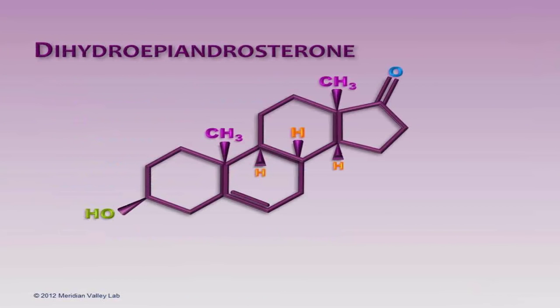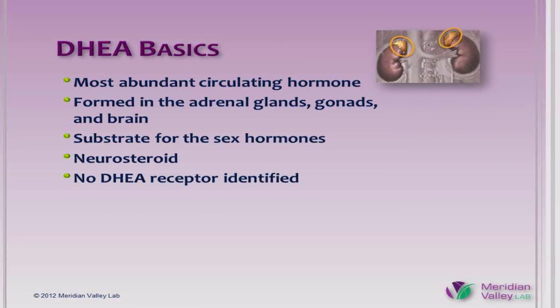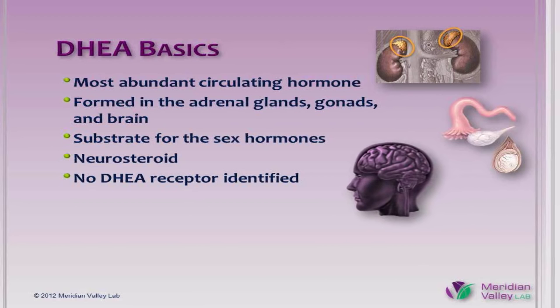DHEA is a 19-carbon endogenous steroid. It's the most abundant circulating hormone in the human body, and not only in humans, but in other mammals as well. It's formed primarily in the adrenal cortex and also formed in the ovaries, testes, and in the brain. It serves as a substrate for the sex hormones — testosterone, estrogen, and their metabolites. It's also considered a neurosteroid and has numerous effects in the brain and central nervous system.